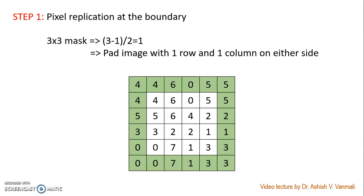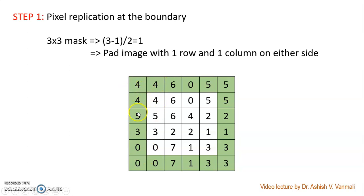The first step is pixel replication at the boundary. We have been provided a mask of 3x3 size, so we need to identify how much padding we need to do. The padding will be (mask - 1) divided by 2. So my mask size is 3, minus 1 divided by 2, giving a value of 1. This means I need to pad my image with one row and one column on each side. The padded portions are shown in green, and the values are replicated — for example, this 4 is replicated here, this 6 is replicated here, 0 is replicated here, 5 is replicated here, and so on.